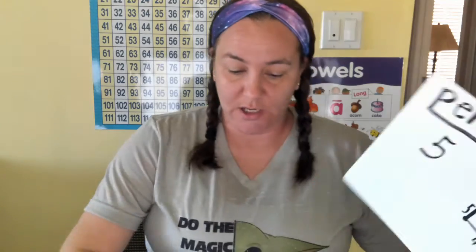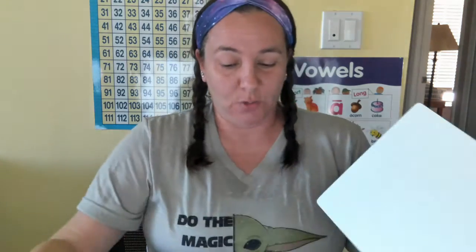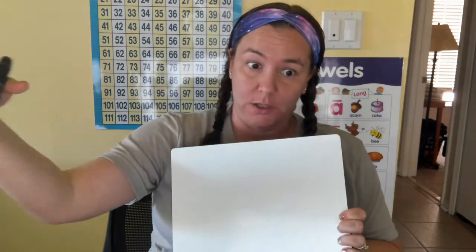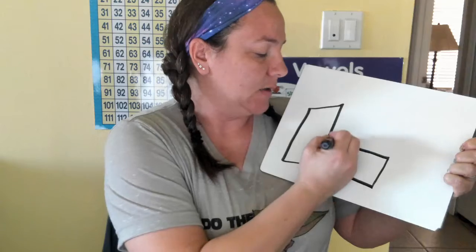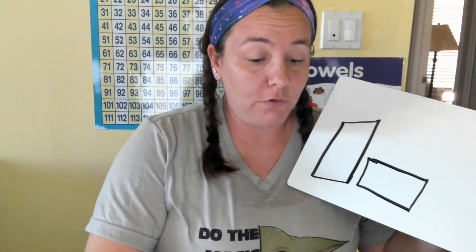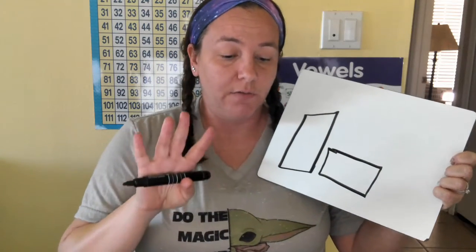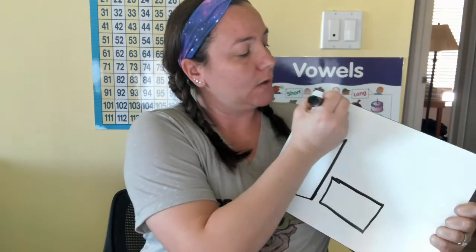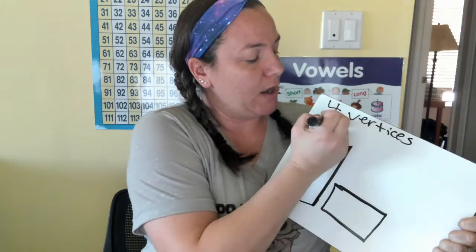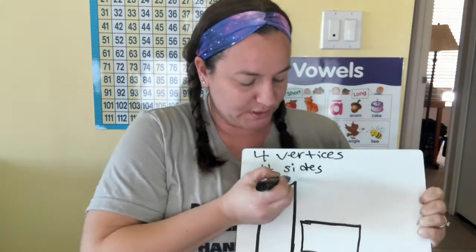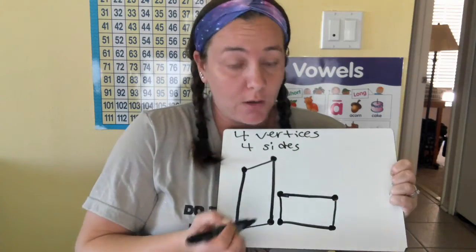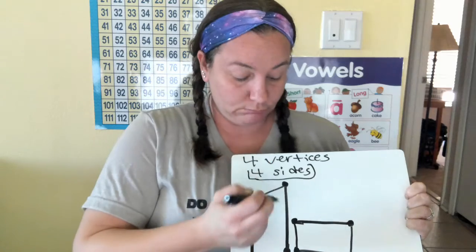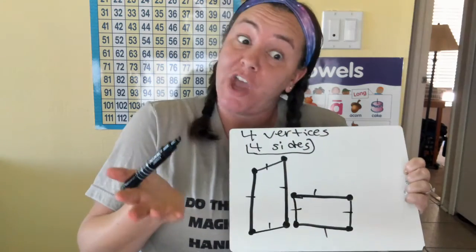The next thing they also talked about is a square versus a rectangle — this blew my mind. A rectangle can be up and down, or it can be sideways. Their definition of a rectangle is that it has four vertices — four corners — and four sides, four flat sides. Both of those shapes have four vertices and four sides, so check and check — these are rectangles.